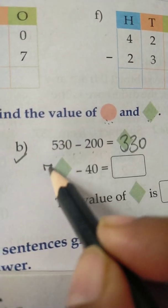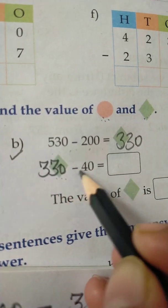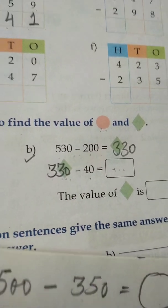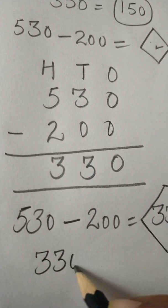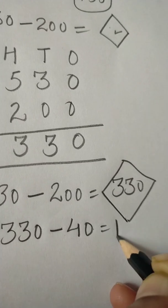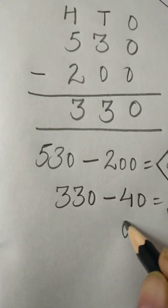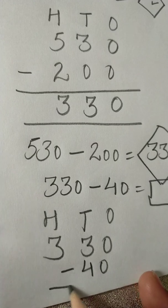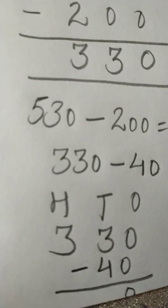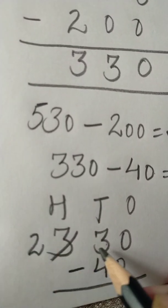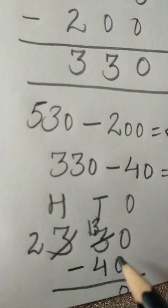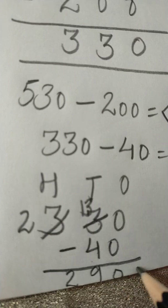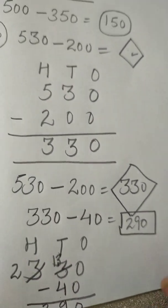The same green box appears again. 330 minus 40 — the box is empty, we have to find what to write. We do subtraction: 330 minus 40. Ones, tens, hundreds — 0, and 3 minus 4 is not possible, so we take 1 borrow from here and it becomes 13. 13 minus 4 is 9, and here 2 — so we got 290. In this box we write 290.